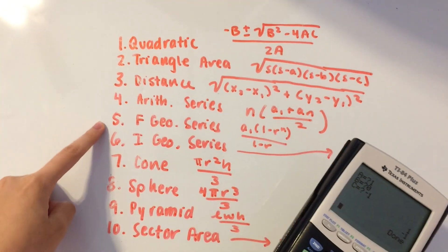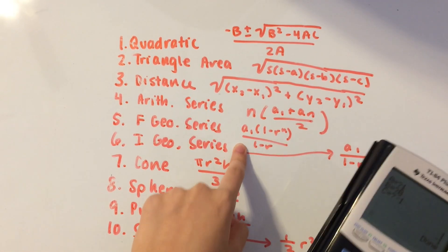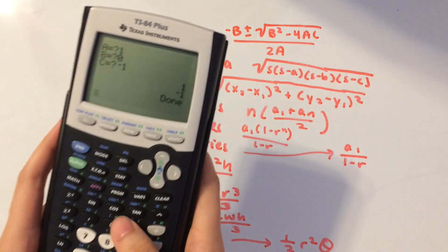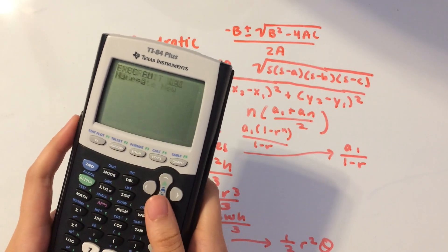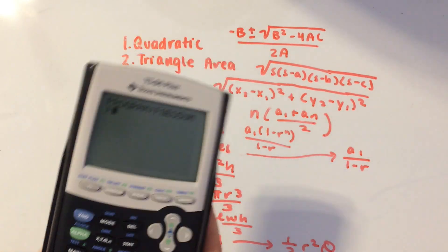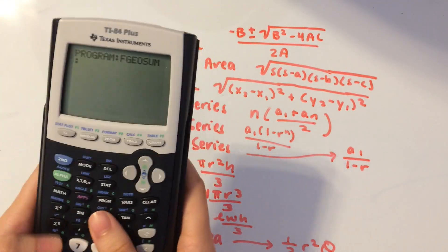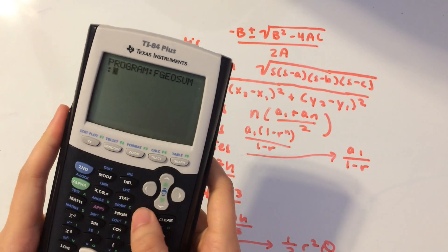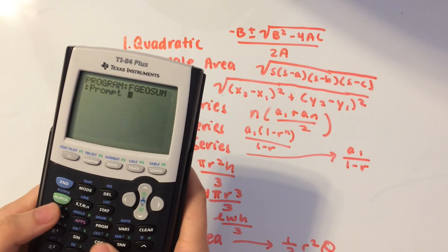Now for the finite geometric series. We have A-sub-1, which we'll rename to F again for first. R and N stay the same. Create a new program and call this FGEOSUM for finite geometric series sum. Prompt for F, R, and N.